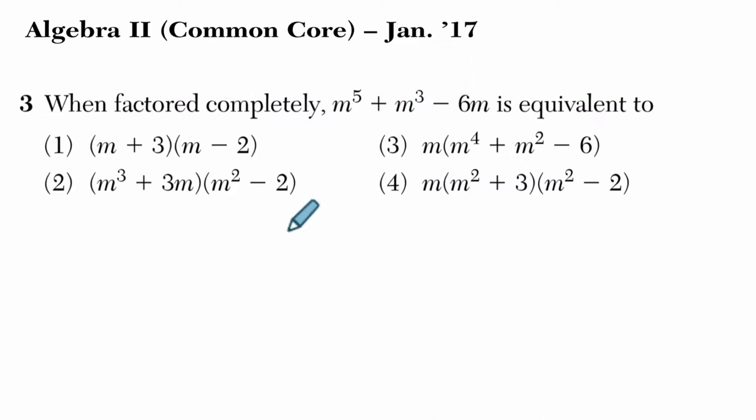Usually what I try to do is factor by grouping if I can, but with three terms, and they all have a common factor of m, my first instinct is to factor m out. So if I factor m out, I'm left with m to the fourth plus m squared minus 6.